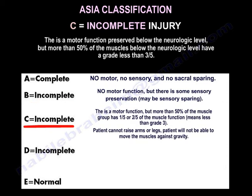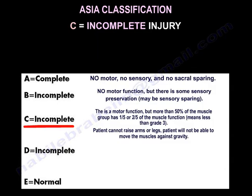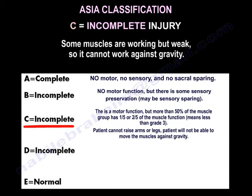C is incomplete. There is motor function preserved below the neurologic level, but more than half of the muscles below the neurologic level have a grade less than 3 out of 5. So the patient cannot raise their arms or legs off the bed, because the action would be against gravity — some muscles are working, but they are too weak to work against gravity.